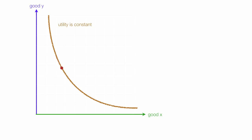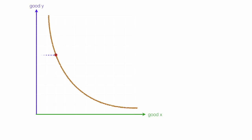Utility is constant along the indifference curve — that means utility does not change. So along any point on this curve, the change in utility is zero. If I take a point along the indifference curve, that's y1 and x1, giving utility at (x1, y1). The second point with y2 and x2 — the utility at these two points are equal to each other.